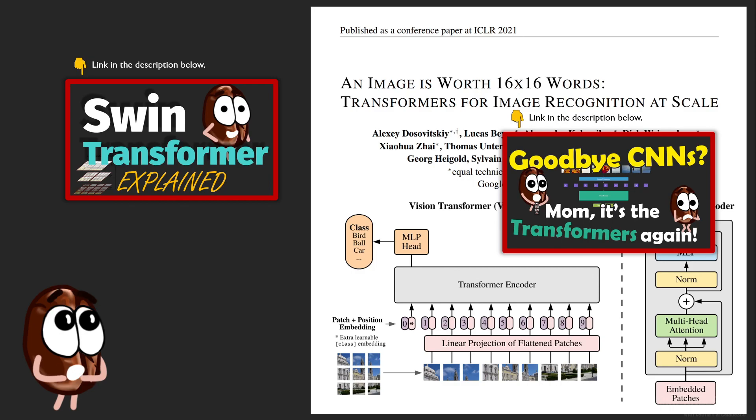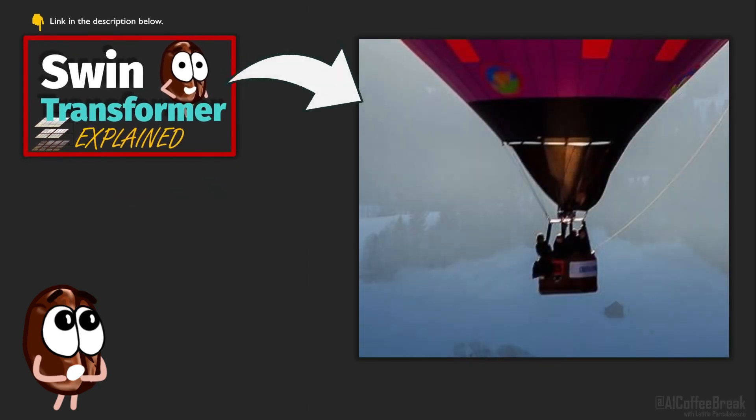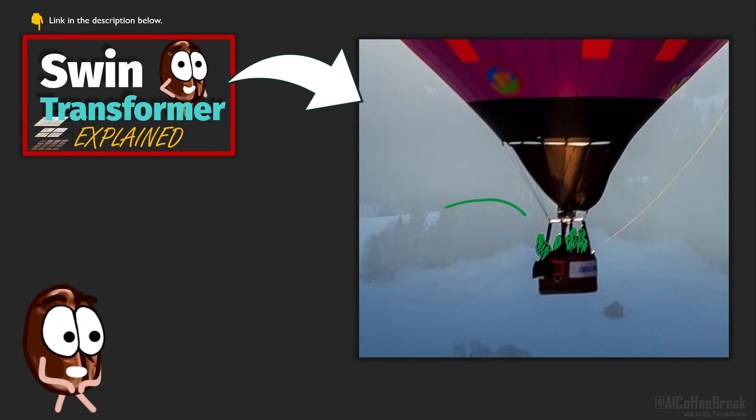If Transformers want to solve not only holistic tasks like image classification, but object detection and semantic segmentation, where attention to detail is required, no pun intended, if they want to solve these tasks, Transformers need to process smaller patches than 16x16 pixels, like ConvNets do.